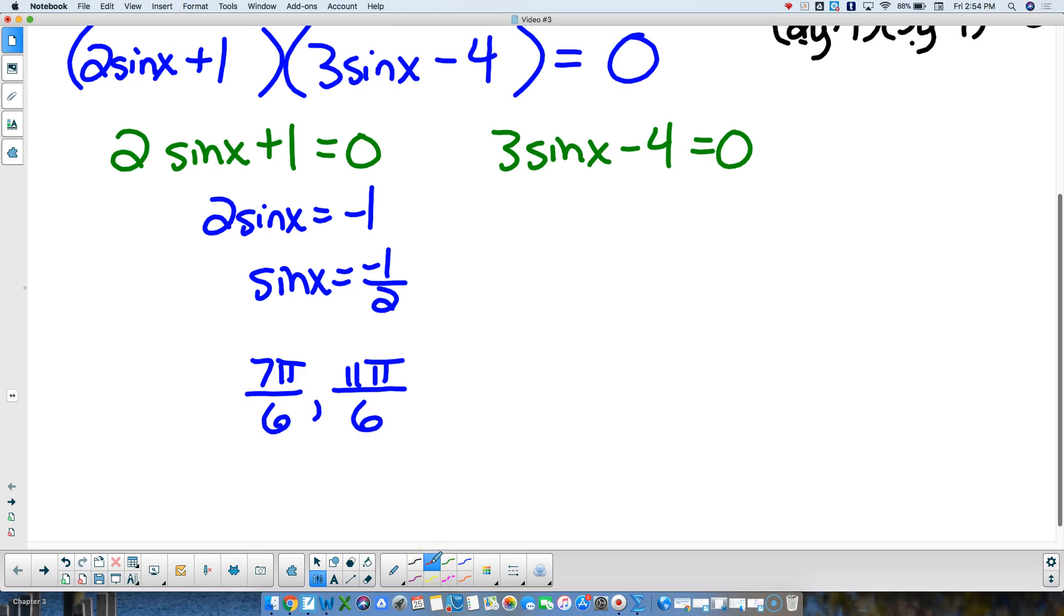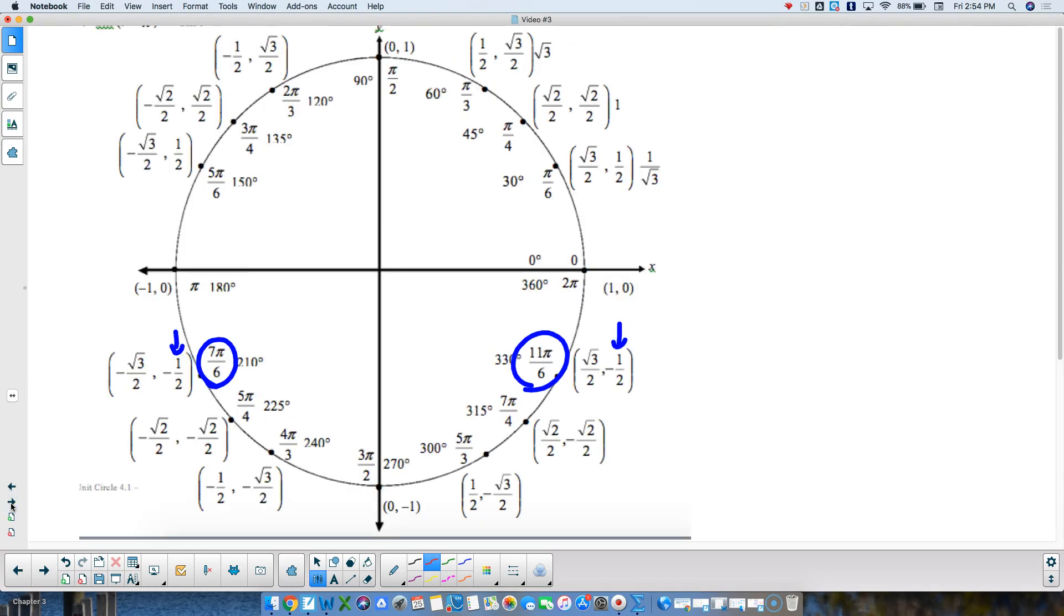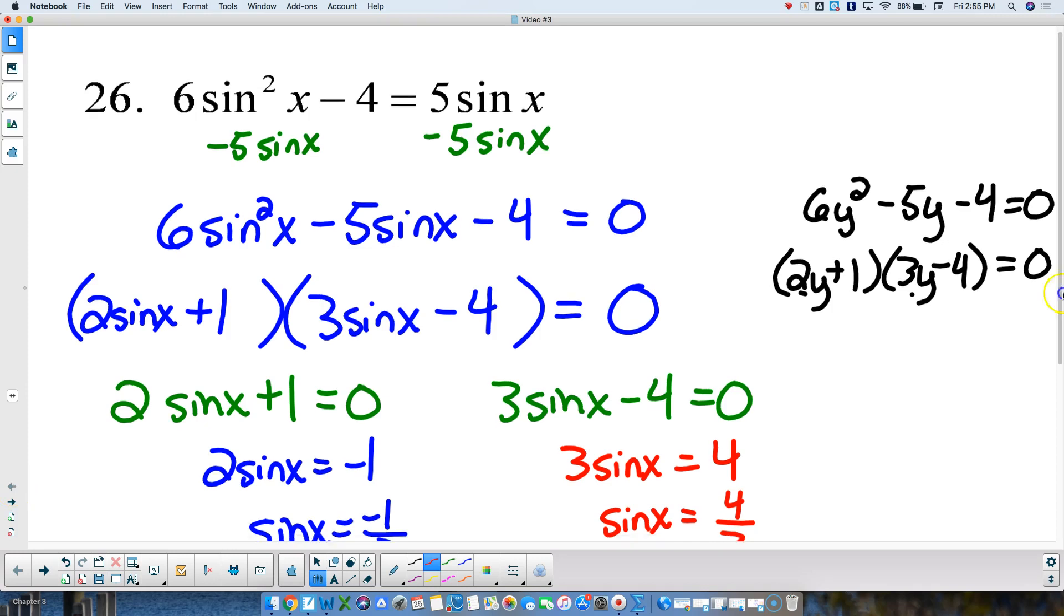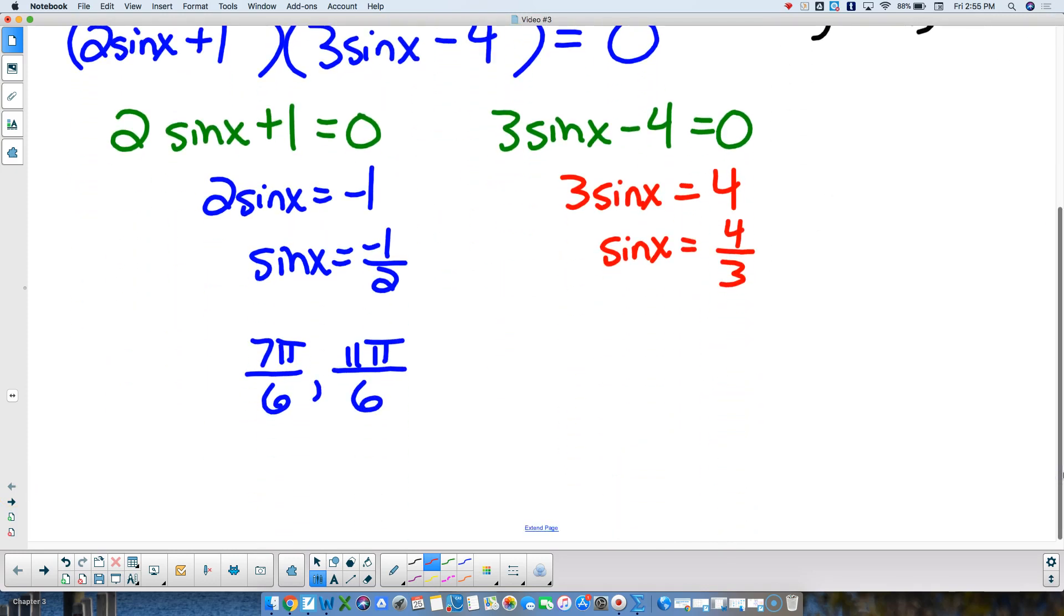Then, work the next one. 3 sine of x is equal to 4 by adding 4 to both sides. Sine of x is equal to 4 thirds. 4 thirds is 1.3 repeating. So I look at my unit circle and I say, ruh-roh, the biggest that my sine value can get is positive 1. So that's off the unit circle. So that cannot happen, since sine values have to be between negative 1 and positive 1. So this part is not possible.